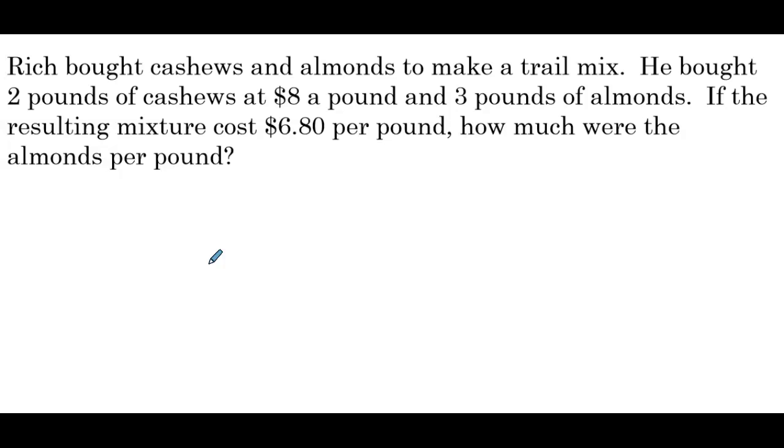Rich bought cashews and almonds to make a trail mix. He bought 2 pounds of cashews at $8 a pound and 3 pounds of almonds. If the resulting mixture cost $6.80 per pound, how much were the almonds per pound? So our unknown, let x be equal to the price of almonds per pound.